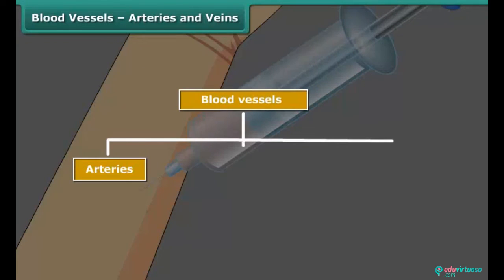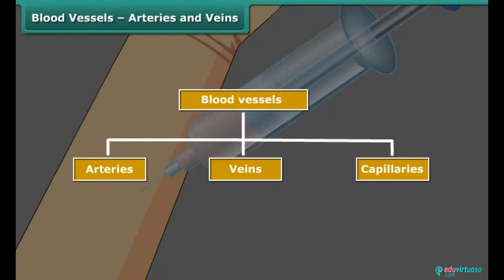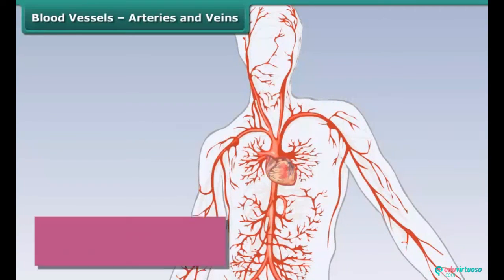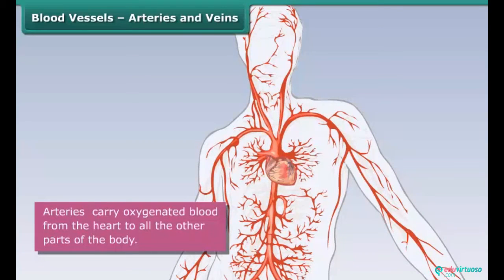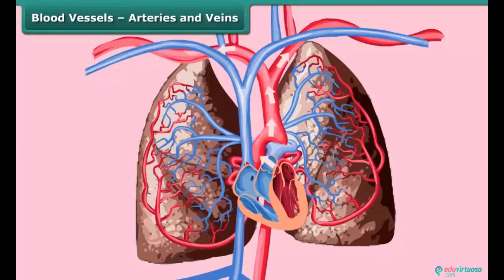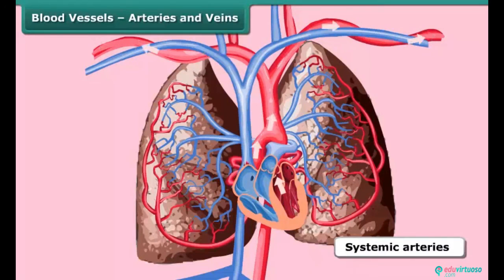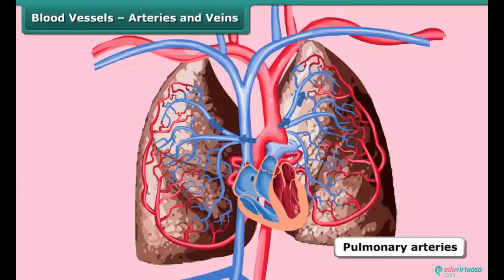The three types are arteries, veins, and capillaries. Arteries are blood vessels with thick walls that carry oxygenated blood from the heart to all other parts of the body. Arteries are of two types: systemic arteries, which carry oxygenated blood from the heart to other parts of the body, and pulmonary arteries, which carry deoxygenated blood from the heart to the lungs.